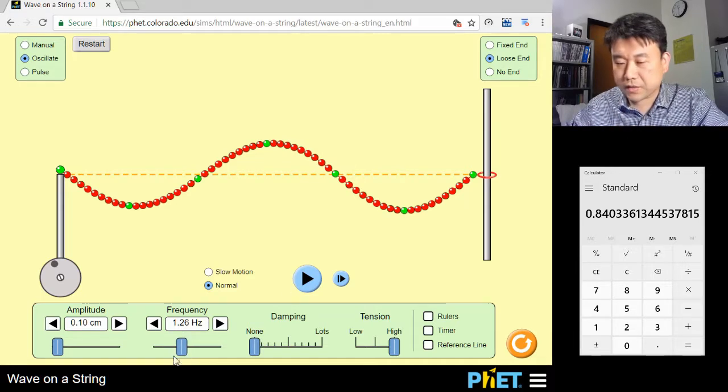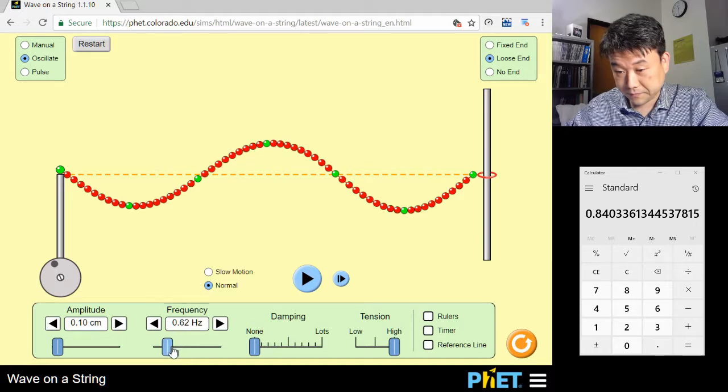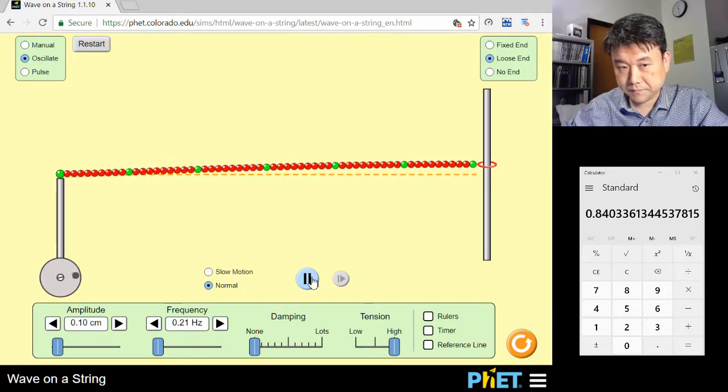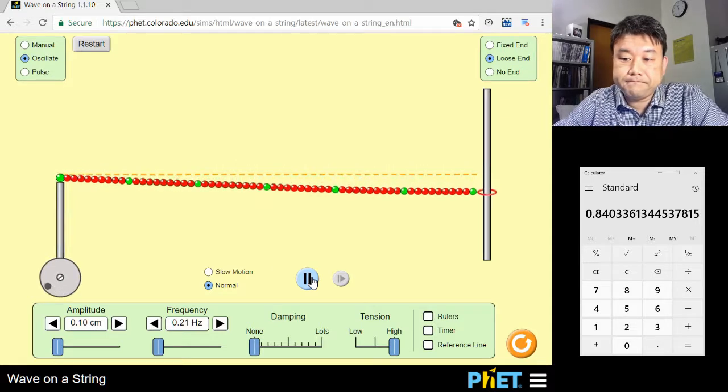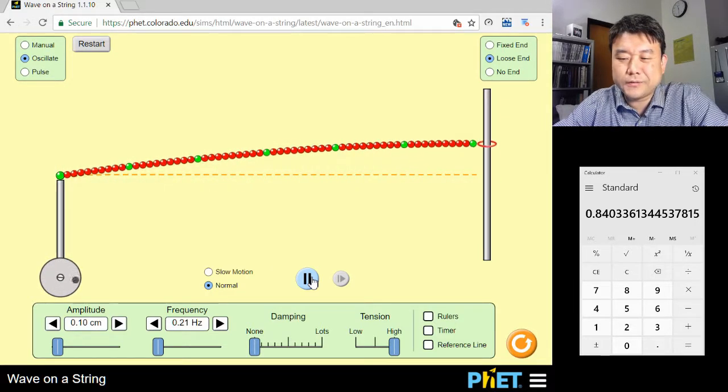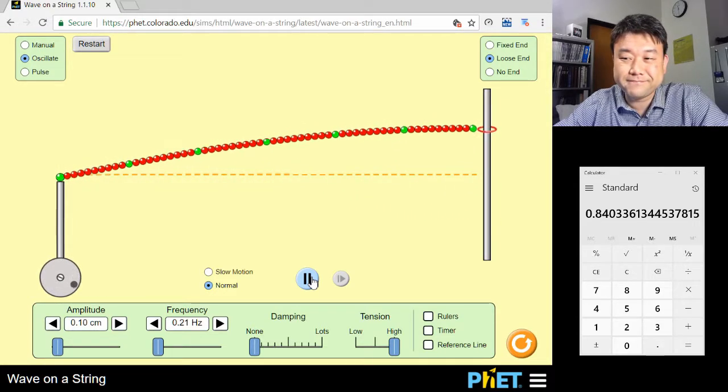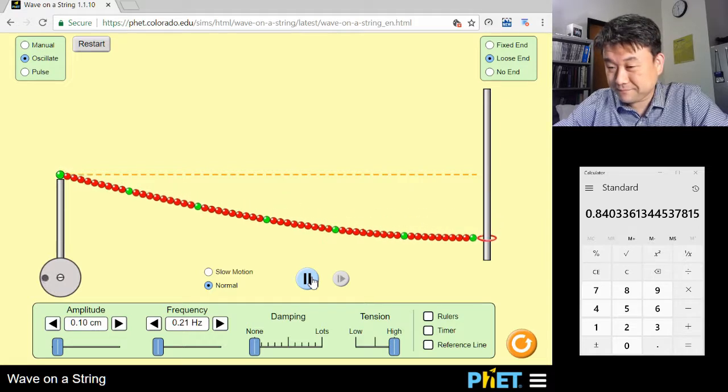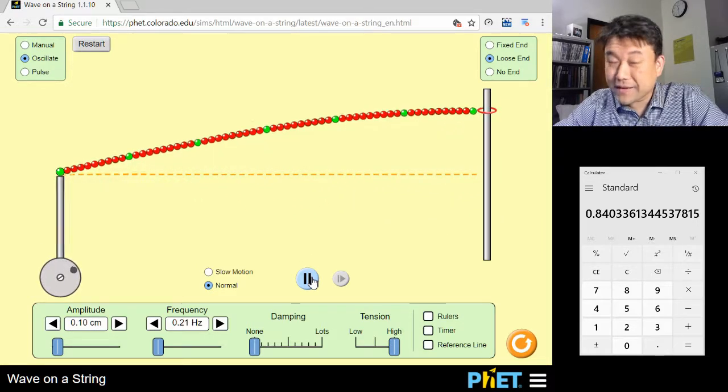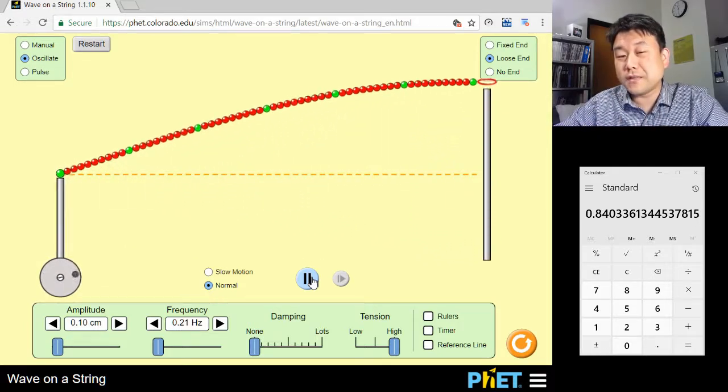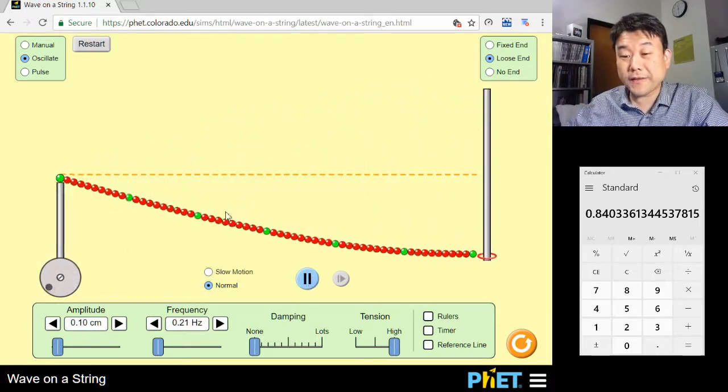We'll have to wait a little. It's low frequency, so it takes a little bit of time for the wave to build up. All right, that looks like a standing wave. This is a fourth of the whole wavelength, which means that the wavelength is actually four times this length.